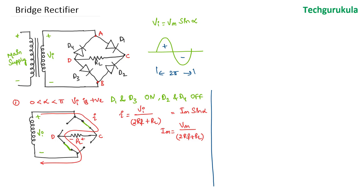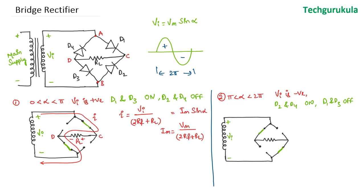Now let's investigate the second case where alpha is between π and 2π — the negative half of the wave — where VI is negative. In this case, node B is at higher potential compared to node A. Therefore, D2 and D4 will be ON, while diodes D1 and D3 will be OFF. In the circuit diagram for this case, VI is negative, meaning node A is at lower potential compared to node B, so D2 and D4 are forward biased.